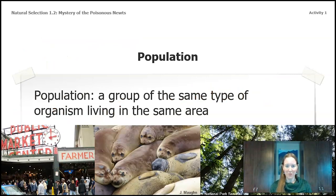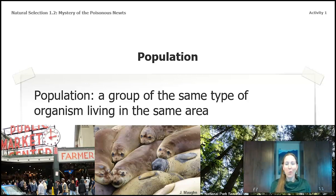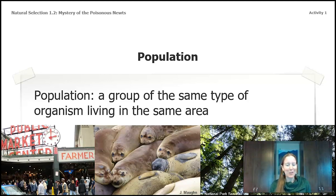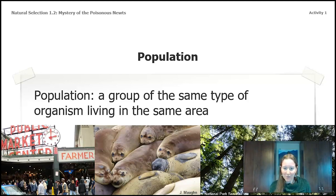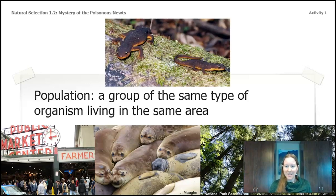A very important word for this unit is population. A population is a group of the same type of organism living in the same area. We can talk about the human population of Seattle or Washington state, populations of animals like seals in the Pacific Ocean, or populations of plants like cedar trees around Mount Rainier. The population we're going to be talking about in this unit are the rough-skinned newts.